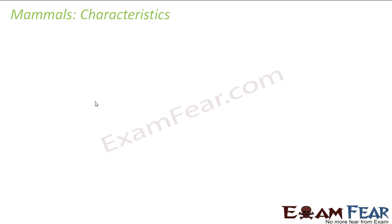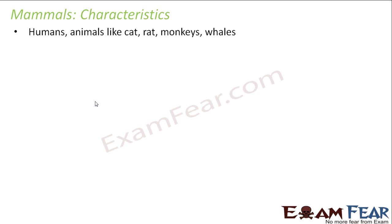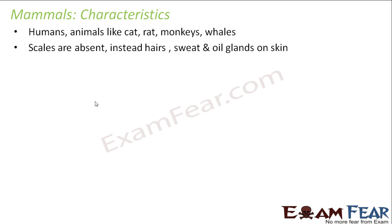Let us look at the last class, that is mammals. What are mammals? Humans, animals like cat, rat, monkeys, and whales — we will talk about all these under mammals. In mammals, scales are absent. Instead, hairs, sweat glands, and oil glands are present on the skin. Even on humans we have hair on our body. We have sweat glands because of which we sweat, and there are also oil glands which secrete oils — you may notice the skin turns oily sometimes. Hair is again for the protection of the organism.